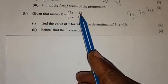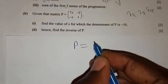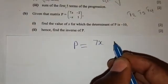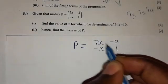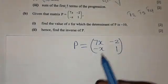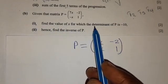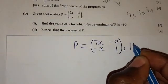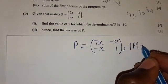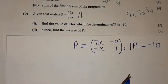Part B introduces a matrix question. Matrix P is given as: [7, x; −2, −x; 1]. Find the value of x for which the determinant of P is negative 10. So they want us to find the value of x such that det(P) = −10.